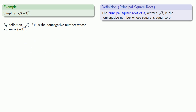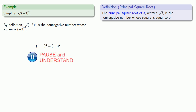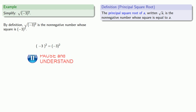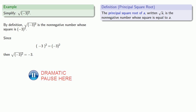Paper is cheap, so let's write things down. We want something squared to be the same as negative 3 squared. Mathematicians aren't so subtle, and the obvious thing we could put inside the parentheses is negative 3. We might say, since negative 3 squared is equal to negative 3 squared, then the principal square root of negative 3 squared is negative 3. Except — this is wrong.